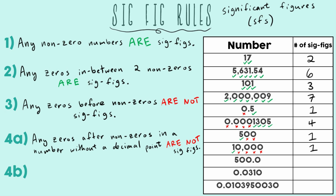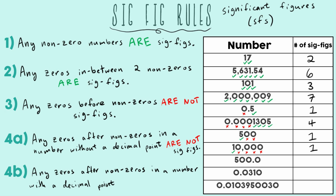Rule 4B: any zeros after non-zeros in a number with a decimal point are SIGFIGs. If there is a decimal point anywhere in the number, every trailing zero counts as a SIGFIG. So 500.0 — written with a decimal point and an extra zero — has 5 as a SIGFIG, and now every single zero counts too because of that decimal point. This version of 500 has a total of four SIGFIGs.